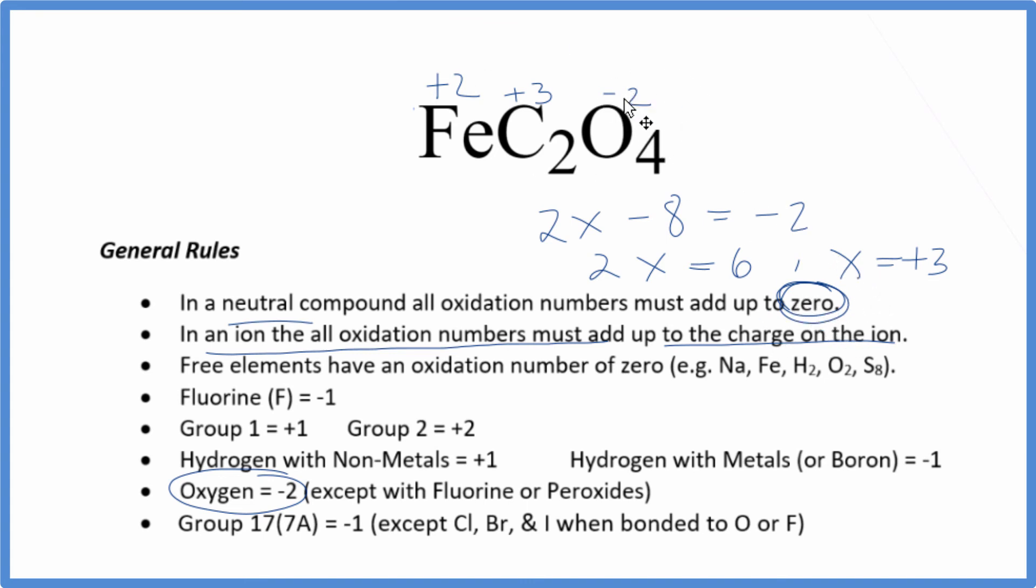To recap, we were able to figure out that the iron was 2 plus because we knew this whole oxalate ion was 2 minus. Next we figured out the carbon here in the oxalate ion based on this rule as well. This is Dr. B with the oxidation numbers for iron(II) oxalate.